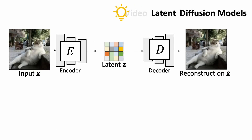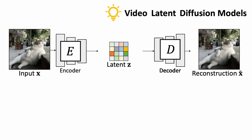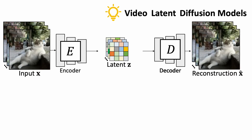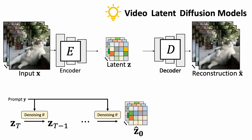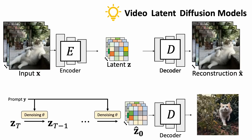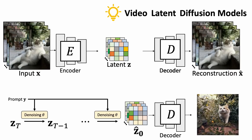The same idea extends to videos. We compress videos into spatial-temporal latents, train a denoising network in the latent space, and decode a clean latent back to an RGB video.